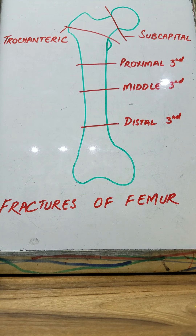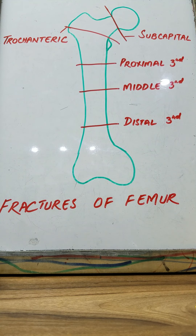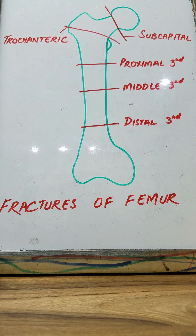Now let's talk about the various fractures of the femur. Fractures of the femur could be of the neck or of the shaft. When it comes to fractures of the neck of the femur, they are usually of two types. The first are subcapital fractures, which occur at the junction of the head of the femur with the neck of the femur. A subcapital fracture is an intracapsular fracture, much more common in the elderly, usually occurring due to just a small stumble or fall. It is much more common in elderly women because of osteoporotic changes in postmenopausal women due to decreased levels of estrogen.